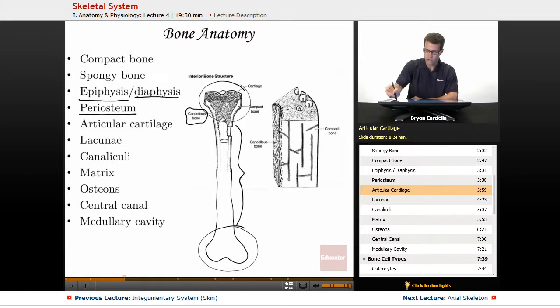The articular cartilage is articular because it's when bones articulate with respect to one another. So when you look at how a bone connects to another bone via a joint, the articular cartilage is usually going to be a nice cushion that's going to be on the ends that are touching the other bones.